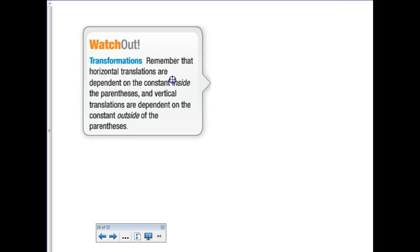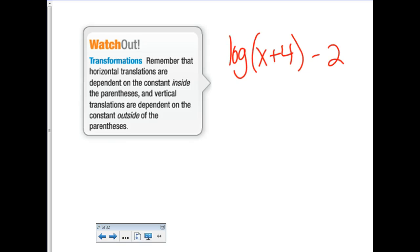This blurb here is talking about how a horizontal transformation would be inside of the function with the x. For instance, if you had common log of (x plus 4) minus 2, how do you suppose that's been shifted or translated? Left 4 - and what do you think this does? Down 2. Even though the shape of the logarithm is a little mysterious to you right now, the translations are going to be the same. This one's going to be shifted left 4 units and down 2 units.